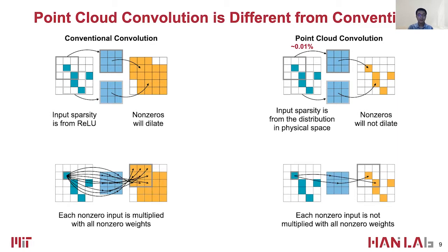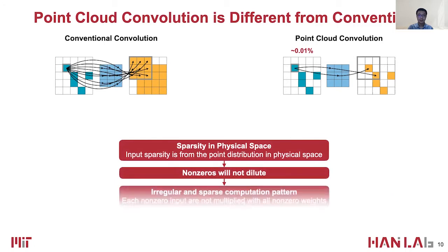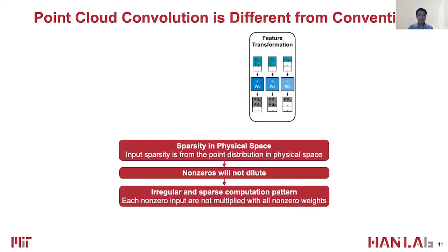In this example, for this non-zero input point, only 2 of the 9 multiplications turn out to be useful to the outputs. Therefore, the utilization ratio of previous sparse neural accelerators will significantly drop. A different type of sparsity in point cloud leads to a different computation pattern, and further results in two bottlenecks.